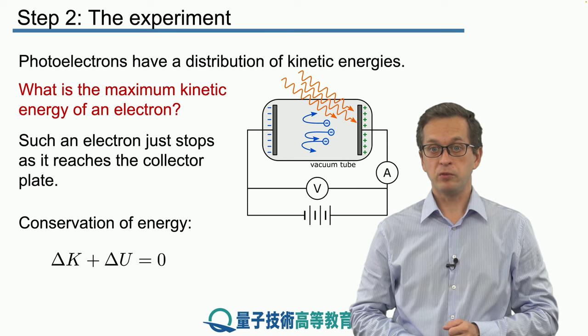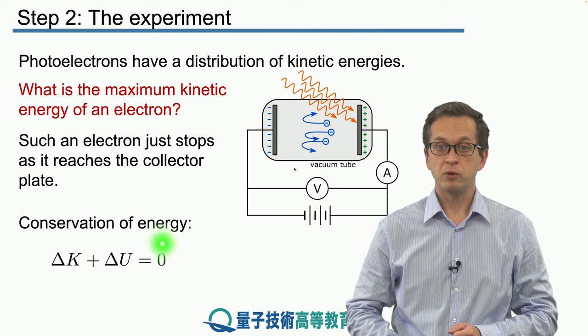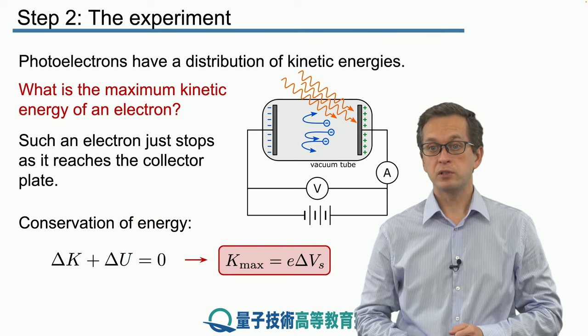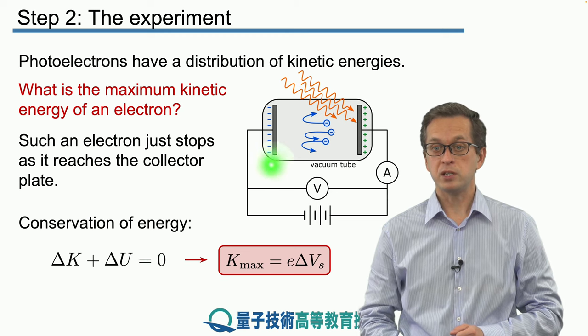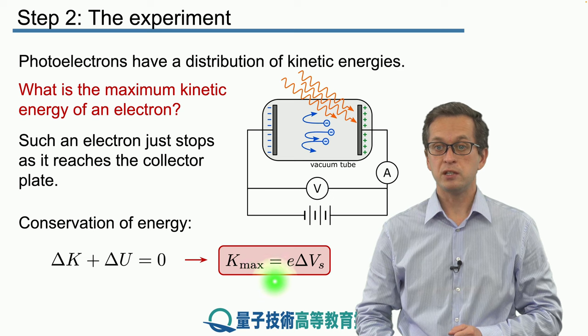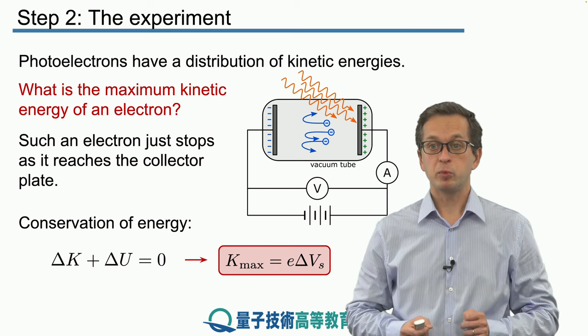By applying conservation of energy, that the change in kinetic energy must be equal and opposite to the change in the potential energy, he was able to deduce that the maximum kinetic energy is given by the following expression, where Kmax, the maximum kinetic energy, is equal to E times delta Vs, the electric potential energy.